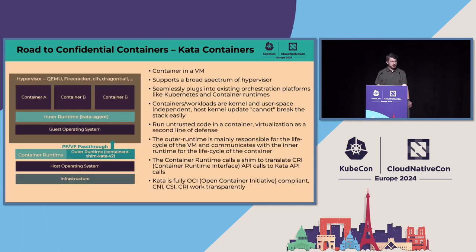So what is Kata? Kata is essentially a container in a VM. Kata supports a broad spectrum of hypervisors — QEMU, ACORN, Cloud Hypervisor — and we're currently working with the upstream community on adding a Rust micro VMM called Dragon Ball. It seamlessly plugs into any orchestration platform like Kubernetes. Container workloads are now kernel and user space independent, meaning host kernel updates cannot easily break the stack. We can run untrusted code in a container. Virtualization is a second line of defense. It adheres to CNI, CSI, and CRI, so running a Kata container in Kubernetes is completely transparent.